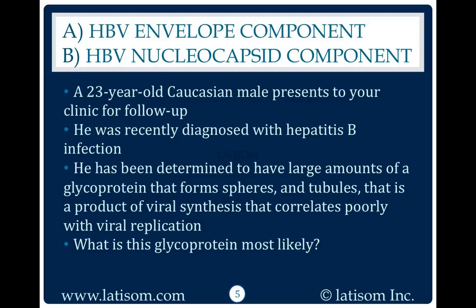A 23-year-old Caucasian male presents to your clinic for follow-up. He was recently diagnosed with hepatitis B infection. He has been determined to have large amounts of a glycoprotein that forms spheres and tubules, which is a product of viral synthesis.